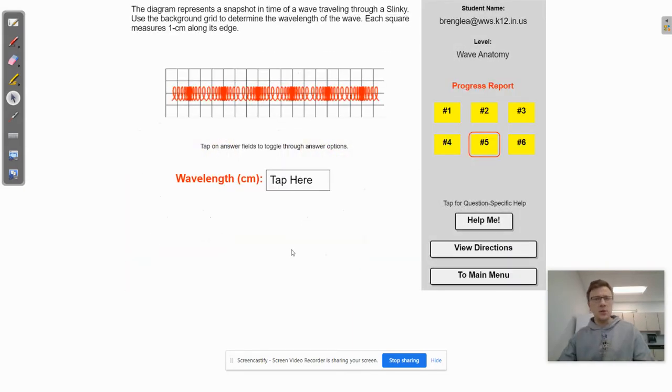All right. And wave anatomy here. So this one is asking us to measure the wavelength of the wave. And we are going to use this grid here. It does say that each square measures one centimeter along its edge. So first thing here is that we need to know what one wavelength is. How do we even find that? And the way that we're going to do that is we're actually just going to go from one compression over to another compression from the middle of the compression to the next. So basically, every time you hit a compression, that's one wavelength.